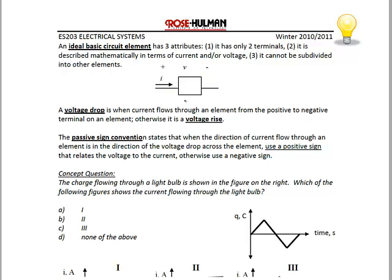As we would with all of our circuit elements, we show the current flowing through the element from left to right, and the voltage across the element has a higher potential on the left with respect to the right. A voltage drop is when current flows through an element from the positive to negative terminal; otherwise it is a voltage rise. So the way we have this element drawn here, we would call this a voltage drop.